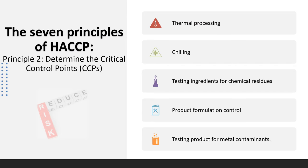Principle 2: Determine the critical control points (CCPs). A critical control point is defined as a step at which control can be applied and is essential to prevent or eliminate a food safety hazard, or reduce it to an acceptable level. For each critical control point you will need to identify the preventive measure. Examples of CCPs may include thermal processing, chilling, testing ingredients for chemical residues, product formulation control, and testing product for metal contaminants. How will you prevent the hazard? Use of specific temperature, pH, time, procedures, etc.